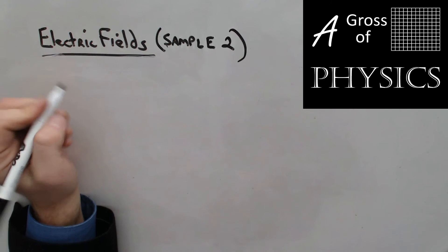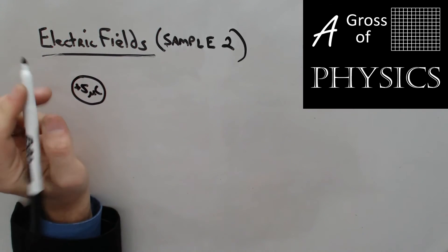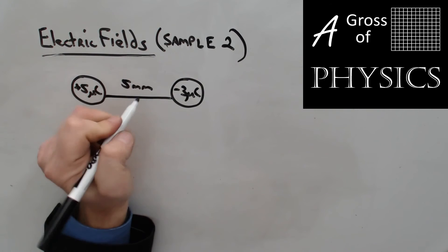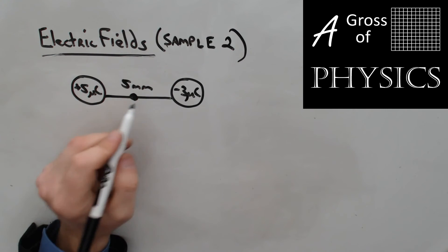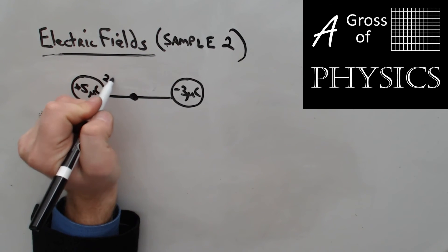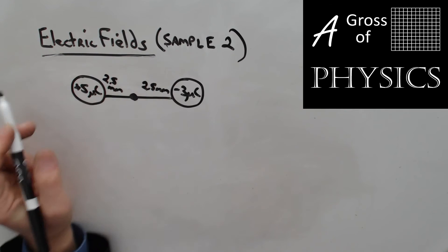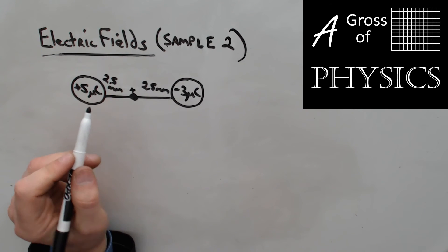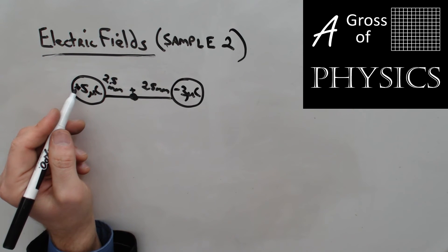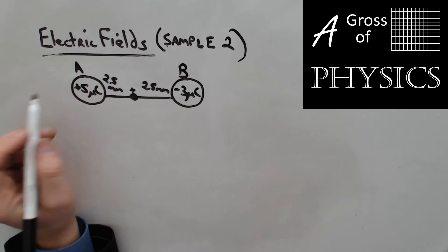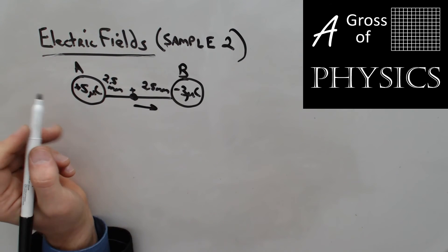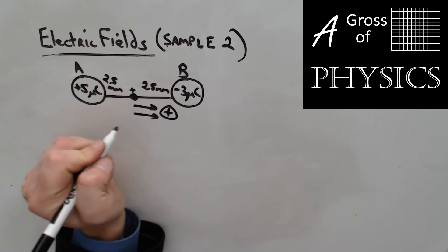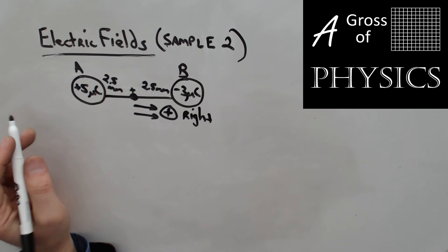Our second sample problem: we have two charges, a +5 microcoulomb and a −3 microcoulomb charge, 5 millimeters apart. We want to find the electric field right in the middle, meaning each charge is 2.5 millimeters from the midpoint. We need to find the electric field caused by both and figure out what would happen if we placed a positive test charge, because direction is always based on a positive test charge. A positive source pushes a test charge to the right, and a negative source pulls a positive test charge. So both contribute in the same direction — to the right.